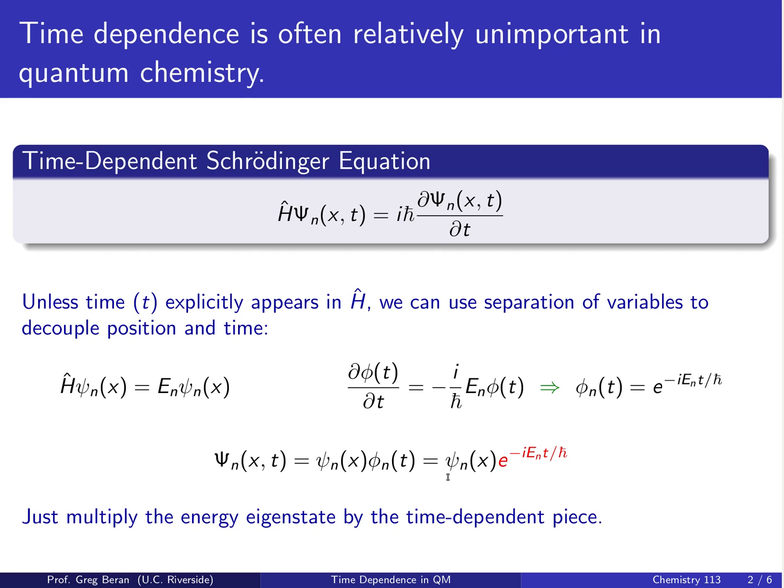You'll notice we just take our time-independent wave function and multiply it by e to the minus i En t over h-bar. The one key ingredient here is that the energy in the exponential must match the energy of the eigenfunction that we're multiplying, ψn.